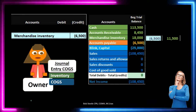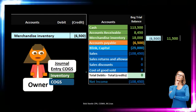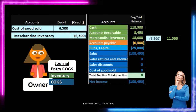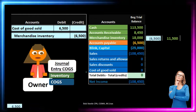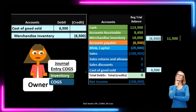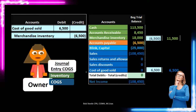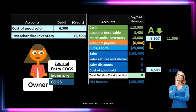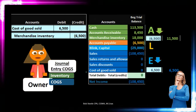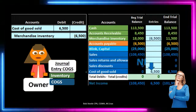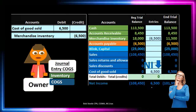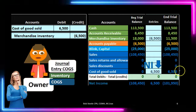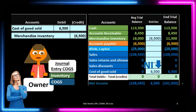The other side of the transaction is the new account — our most important expense account: cost of goods sold. It's an expense, and expenses all have debit balances and generally go up. Cost of goods sold is going to go up by $6,500 in the debit direction to $6,500. On the accounting equation, assets are going down, liabilities remain the same, and equity is going down because net income is going down. The expense going up brings net income from $108,450 minus $6,500 to $101,950.